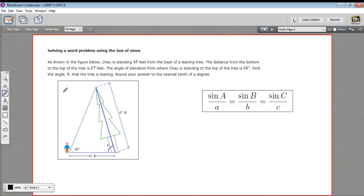Well, let's read this problem first. It says, as shown in the figure below, Chow is standing 45 feet from the base of a leaning tree. That doesn't look safe.